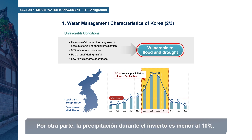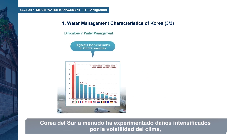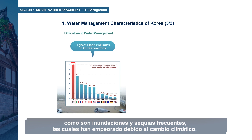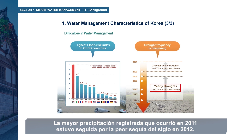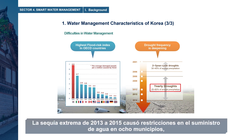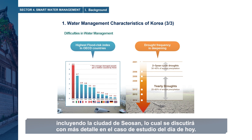Winter precipitation, on the other hand, is less than 10%. South Korea has frequently experienced damages from intensifying climate volatility, such as frequent floods and droughts, which has worsened due to climate change. The heaviest recorded rainfall in 2011 was followed by the worst drought of the century in 2012. The extreme drought from 2013 to 2015 caused water supply restrictions in eight municipalities, including Seosan City, which will be discussed in detail as today's case study.